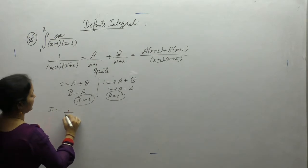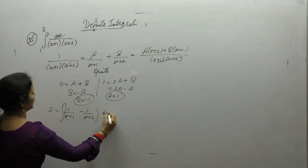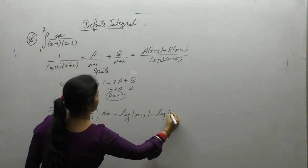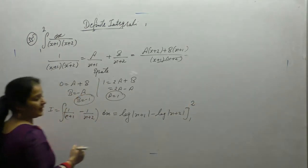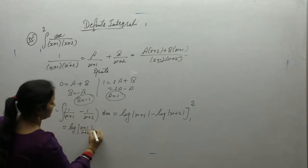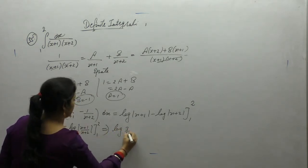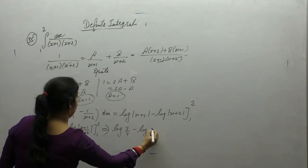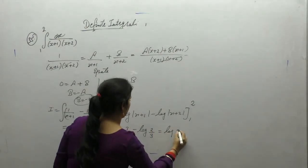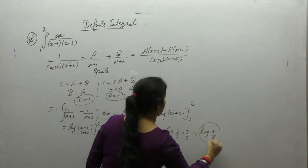Substituting values: 1/((x+1)(x+2)) = 1/(x+1) - 1/(x+2). Integrating gives log(x+1) - log(x+2). Using log a - log b = log(a/b), apply limits 1 to 2: upper limit gives log(3/4), lower limit gives log(2/3). Applying log rules again: log(3/4) - log(2/3) = log(9/8).